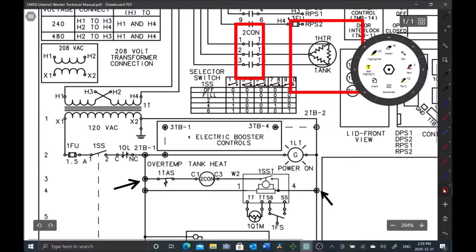So the next place where I'm going to test is going to be at this point here and this point here. So what that is is 2TB1 which is terminal block 1 and terminal block 2. By testing that it's going to tell me if the transformer is good and everything before the transformer.